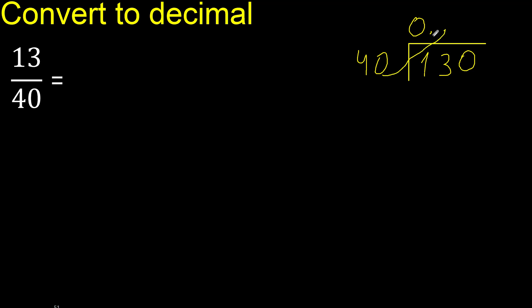40 multiplied by which number is nearest to 130 but not greater? Multiply by 4 is greater. Multiply by 3 is 120, not greater. Subtract is 10.